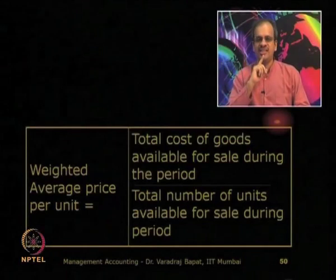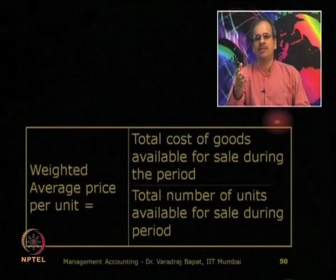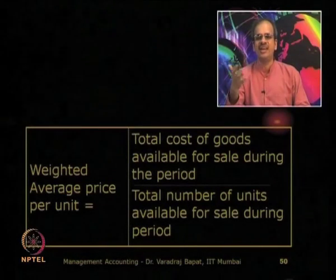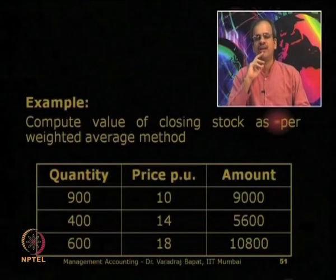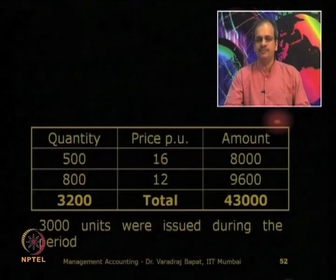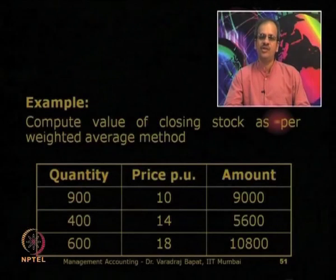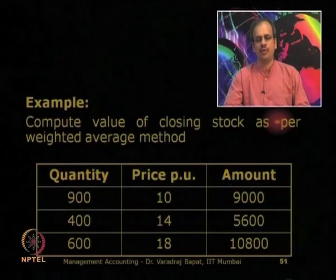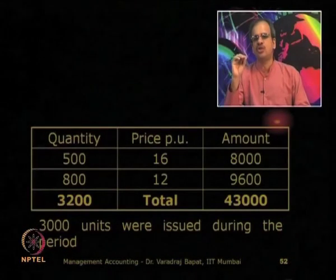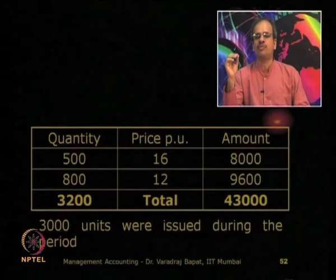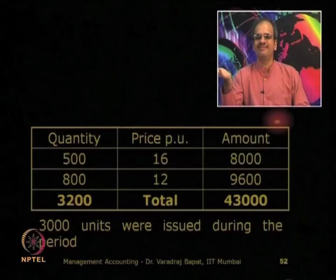The weighted average price is calculated as the total cost of goods available divided by the total number of units available for sale during the period. For example, suppose these 5 purchases are there — 900 units at ₹10, 4,000 at ₹14, and so on. Total purchases are 3,200 units, the total cost of purchase is ₹43,000, and in that period 3,000 units were issued. We need to calculate the value of stock.